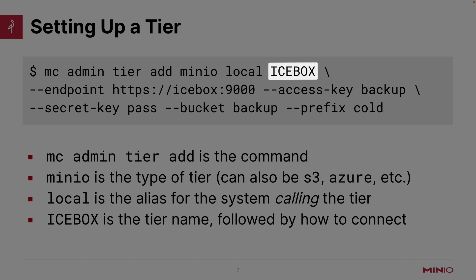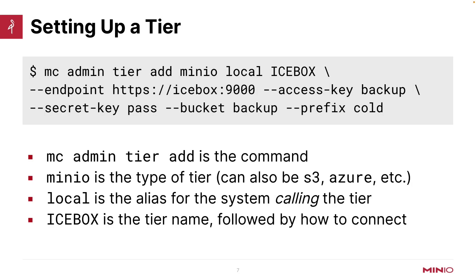My tier name is Icebox — you can name it whatever you want. Following that Icebox tier name, I have to tell it how to connect. I need Icebox 9000 as my endpoint. I need an access key and a secret key, and that access key and secret key needs to have certain permissions associated with it — take a look at the documentation to see all the permissions. Then I tell it which bucket I'm going to be sending my transitioned objects to, and if there's a prefix I want to use in that bucket I can provide it here; the prefix is not required. And that's setting up a tier.